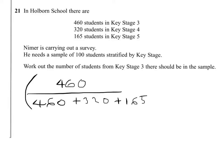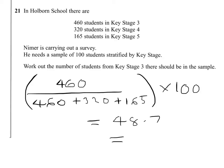We put that in brackets and multiply by 100, then round to the nearest whole person. That comes to 48.7, which rounds to 49.